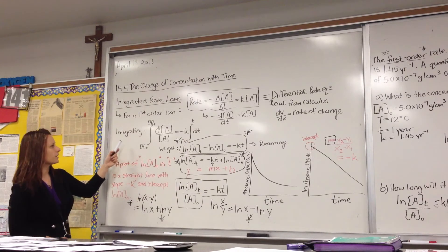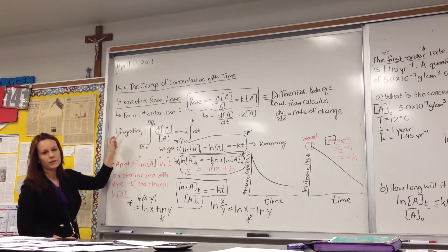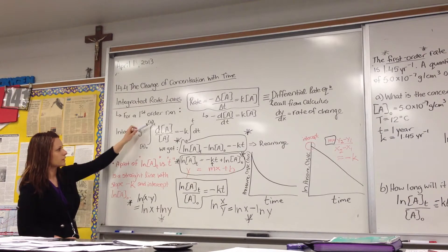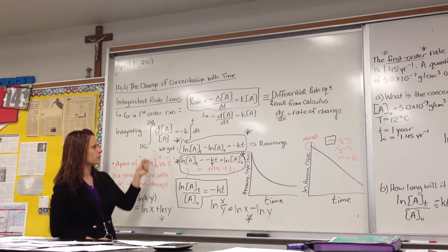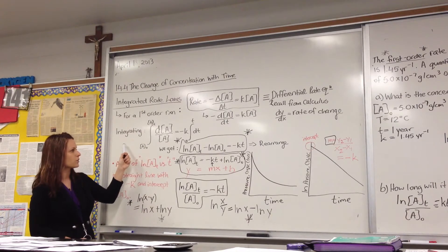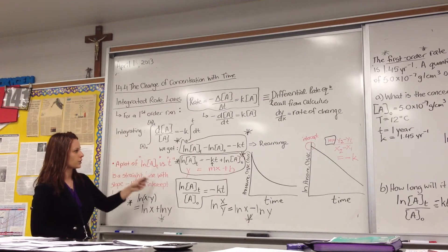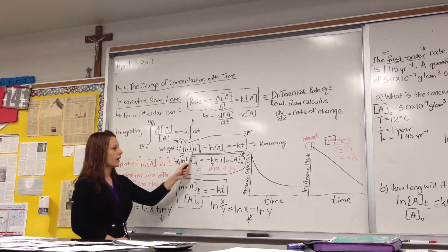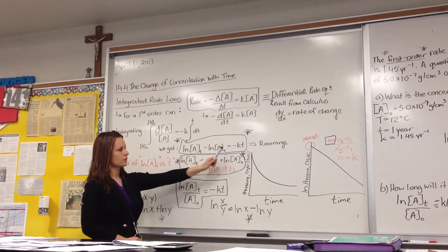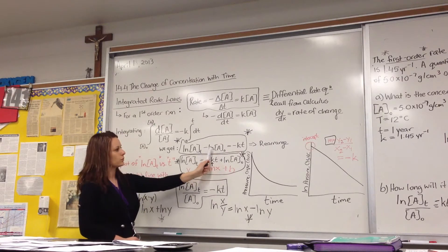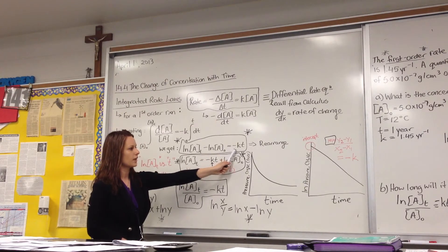If we integrate this value so that it's relevant over a wider spectrum of different time values, we end up getting the integrated rate equation, which we're not going to go through the actual calculus, just as long as you understand that this is how we get this equation, we end up getting ln of A at any time T minus the ln of A naught, the zero stands for naught, which means initial concentration of A is equal to negative KT.